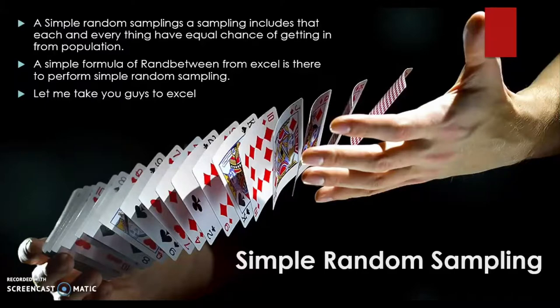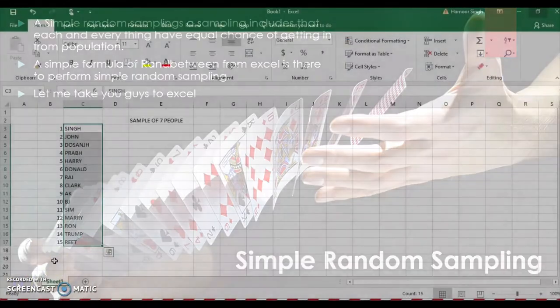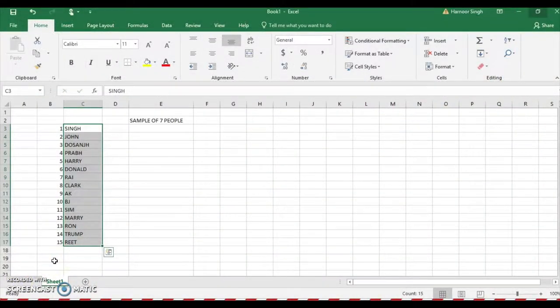Here we come to my Excel. Now I'm going to let you know how to use Excel sheet for making a sample. I use the RANDBETWEEN function for simple random sampling. I wrote 15 names over here - it can be from your organization, your colleagues, your mates, or anyone.